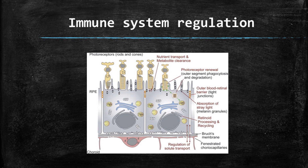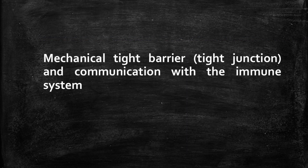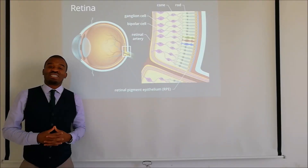And lastly, immune system regulation. The inner retina is an immune-privileged space, which is supported by the retinal pigment epithelium in two ways. RPE provides a mechanical tight barrier between the blood vessels of the choroid and neural retina cells, as well as helping to communicate with the immune system.